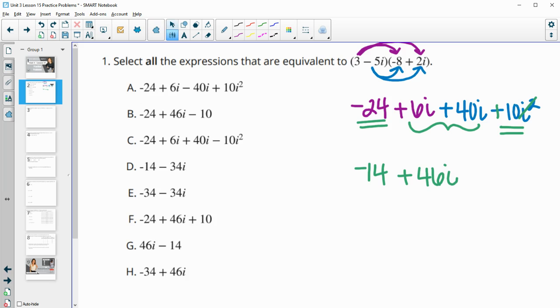So in this first one, and actually let me get this out of here so we can see our original. So negative 24 plus 6i. This says minus 40i. And we have plus. So this one is not equivalent.